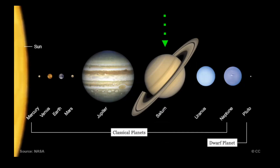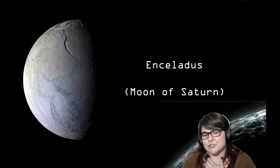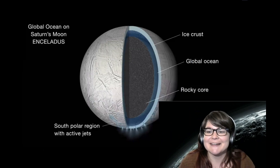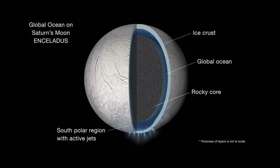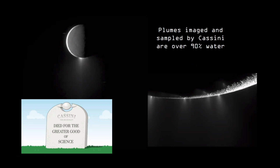Next up is a moon of Saturn we're interested in for very similar reasons as Europa — it's Enceladus, which is a little prettier, but that's just my opinion. Like Europa, Enceladus probably has an icy crust and a global ocean, but also a rocky core. There are really cool active jets or plumes on the south pole of Enceladus, imaged by Cassini in the past decade. Cassini was able to sample these plumes and show that they're about 90% water. And Cassini — RIP — plummeted into Saturn's atmosphere to protect moons like Enceladus from contamination by us humans, since we don't want to contaminate anything that might have potential for life. It kind of looks like Enceladus is blasting off into space.